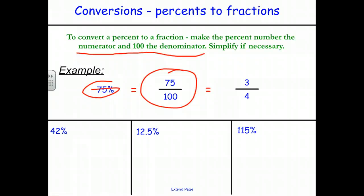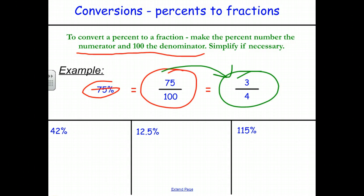We then simplify as necessary to get 3 fourths. Go ahead and pause the video and look at these three problems: 42%, 12.5%, and 115%. Write them as fractions and simplify them down to their simplest form.